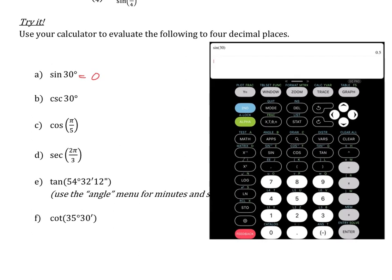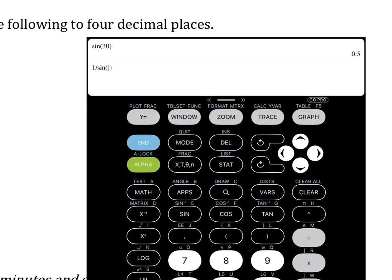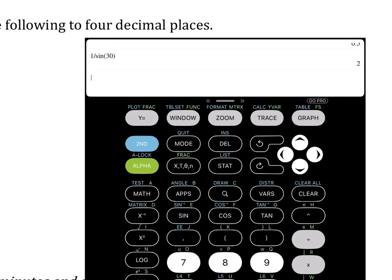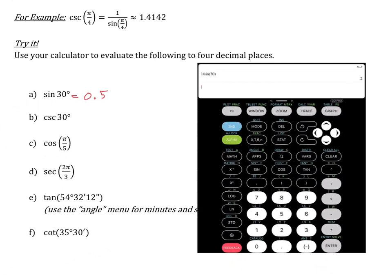Now if I want cosecant of 30, cosecant of 30 is 1 over the sine of 30. So we're going to do 1 divided by the sine of 30 degrees, and that is 2.